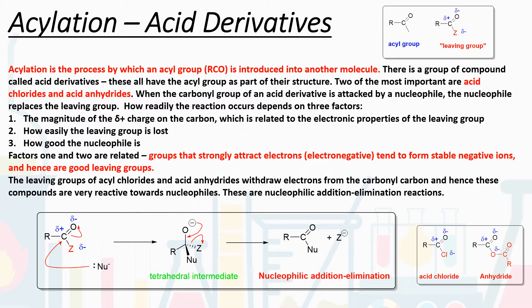Carbon can only have four bonds, so we have to break the weakest bond — which is the carbon–Z bond — and kick off the leaving group. We have an arrow from the center of the carbon–Z bond ending up on Z, the leaving group. Again, this tends to be a group that attracts electrons — an electronegative atom that's happy to accept the electrons and become a stable negative ion. Overall, we've replaced whatever the leaving group was with our nucleophile.